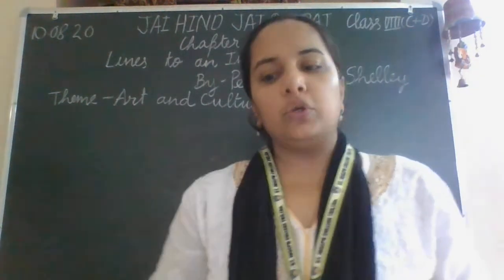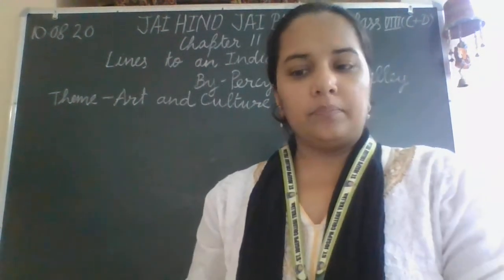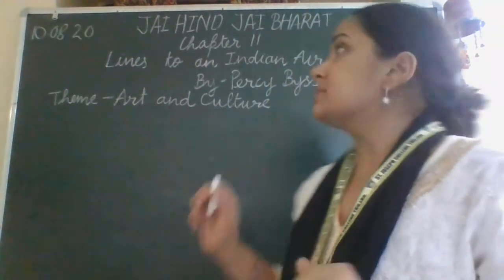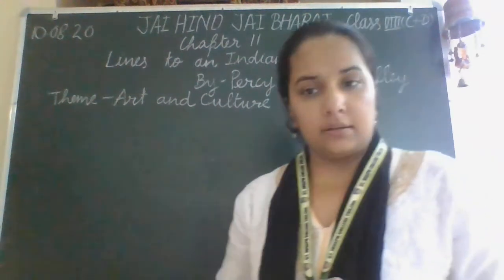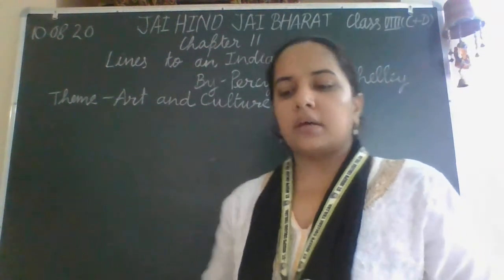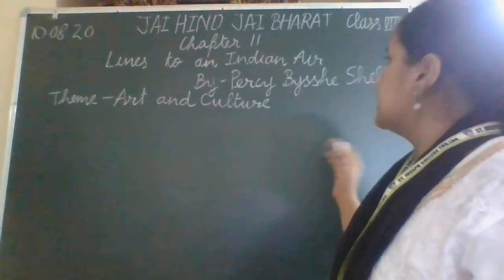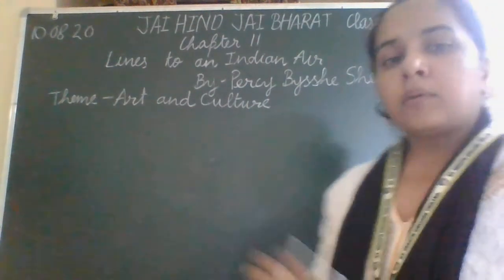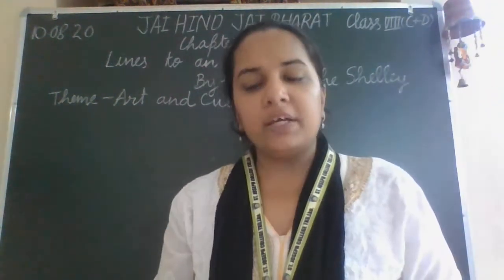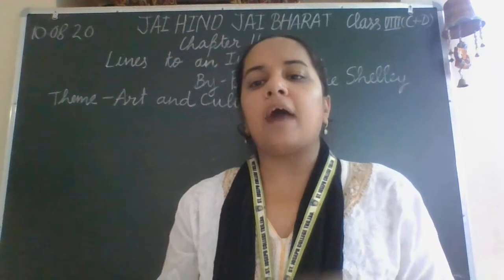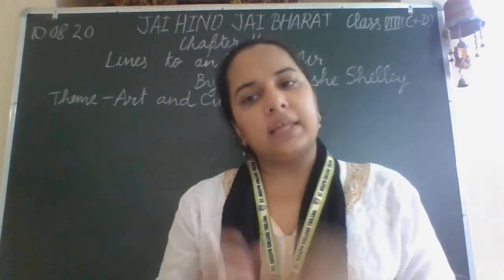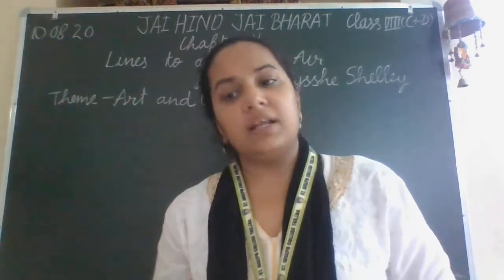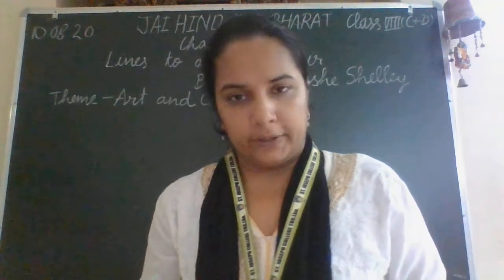Jai Hind. Today we are going to start a poem of English literature, that is chapter 11: 'Lines to an Indian Air.' This poem is written by P.B. Shelley. First we will have an introduction about the poet and the poem, and then I will read the poem one stanza at a time and give the explanation.